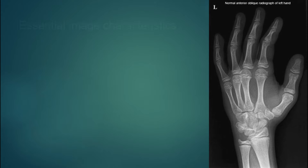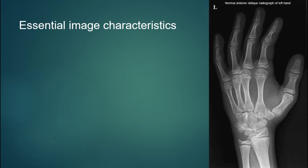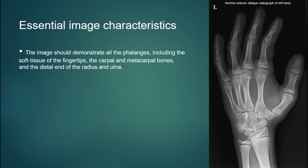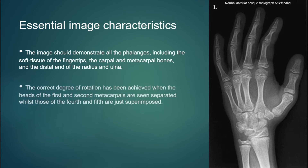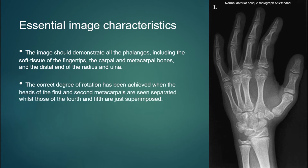Oblique view of hand x-ray. Essential image characteristics: the image should demonstrate all the phalanges, including the soft tissue of the fingertips, the carpal and metacarpal bones, and the distal end of the radius and ulna.